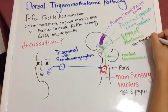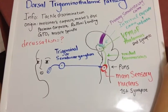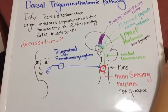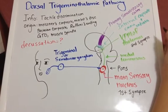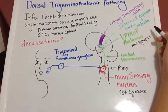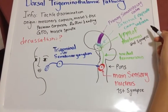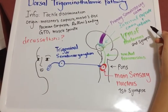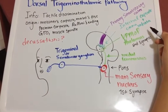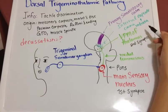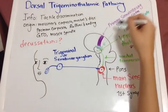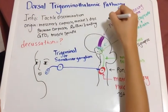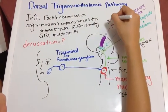Then the information is sent to the primary somatosensory cortex via projecting fibers such as the internal capsule and corona radiata, and you will have your third synapse in the primary somatosensory cortex.